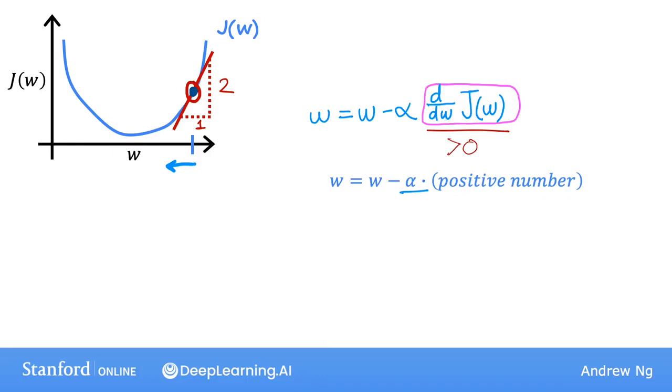And you may notice that this is the right thing to do if your goal is to decrease the cost J, because when we move toward the left on this curve, the cost J decreases and you're getting closer to the minimum for J, which is over here. So so far, gradient descent seems to be doing the right thing.